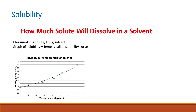This is the solubility curve of ammonium chloride. We plot temperature on the x-axis because this is our independent variable — we change the temperature ourselves. We then measure the solubility, which is how many grams of ammonium chloride dissolve in 100 grams of water. This is our dependent variable, and it goes on the y-axis.